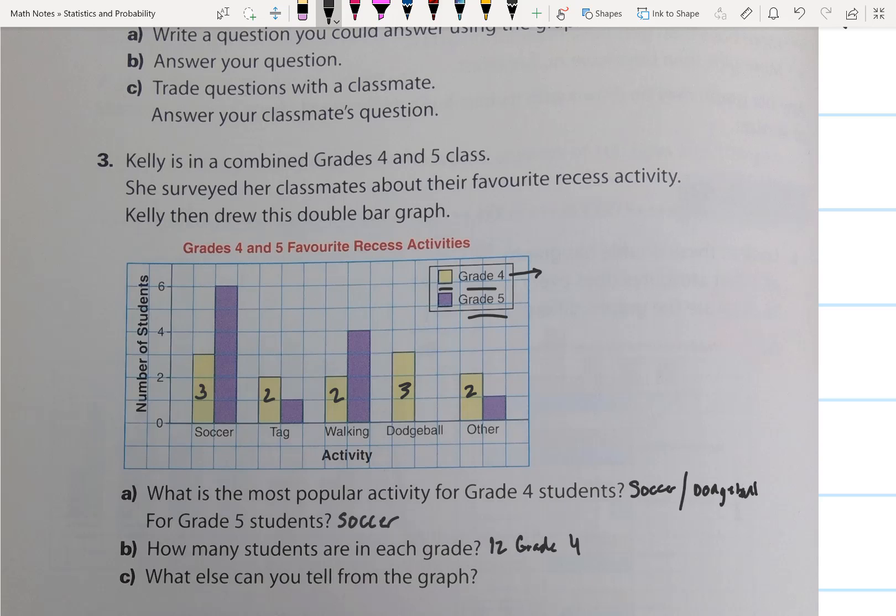And then we'll add up the grade 5 students, so we have 6, 4, and 1. So we have 11 grade 5 students.